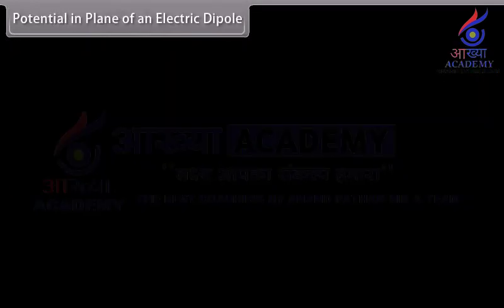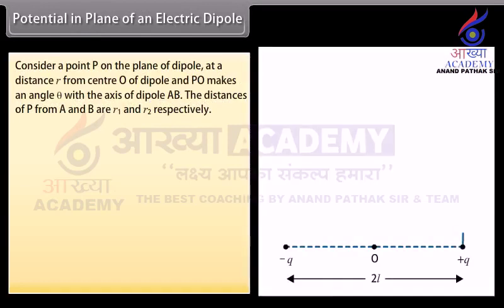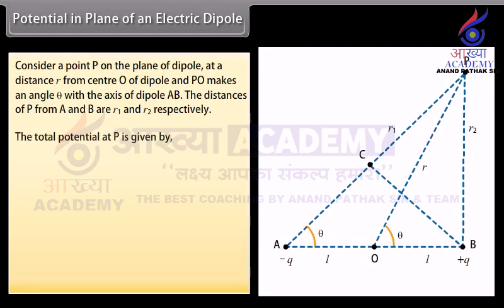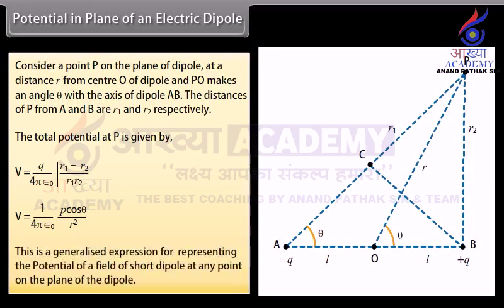Potential in the plane of an electric dipole: Consider a point P on the plane of the dipole at distance R from center O, where PO makes an angle theta with the axis of the dipole AB. The distances of P from A and B are R₁ and R₂ respectively. The total potential at P is given by V equals Q upon 4πε₀ multiplied by (R₁ minus R₂) upon R₁R₂, which equals 1 upon 4πε₀ multiplied by P cos θ upon R². This is the generalized expression for the potential of a short dipole at any point on its plane.